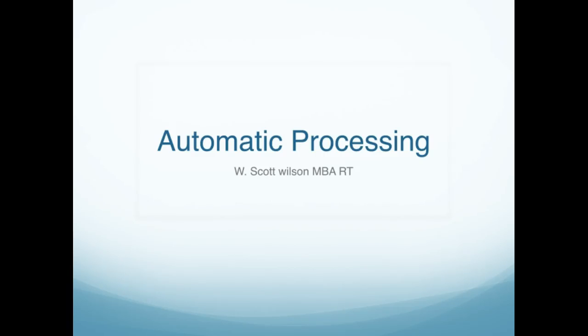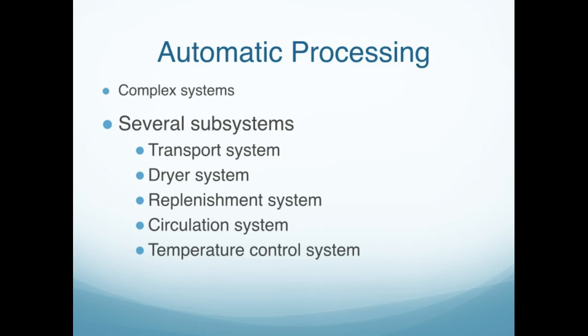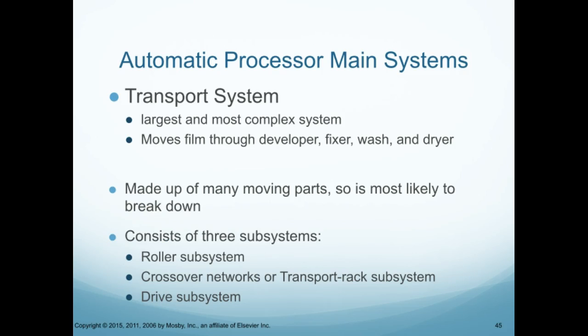Let's go over automatic processing in Radiologic Technology. Automatic processing is a complex of systems — several subsystems. We have a transport system, a dryer system, replenishment system, circulation, and temperature control systems, all within this automatic processor unit.